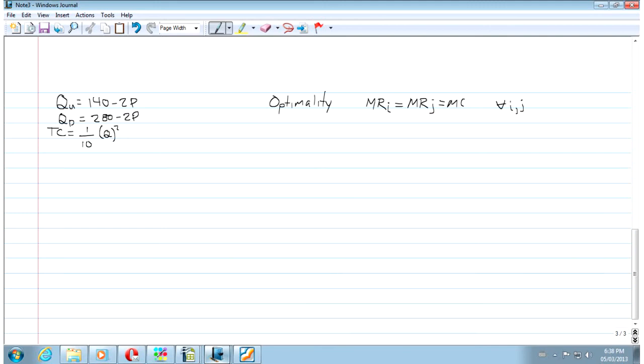Of course, if your marginal revenue from one section of the market was higher than the other, then you would move some quantity from the one section to the other section until those were equal. Okay, so well, how are we going to do that? Well, to start off with, it looks like we need marginal cost. So let's take that. So marginal cost is 1 over 5 Q.